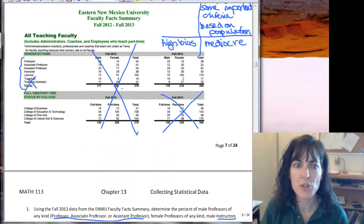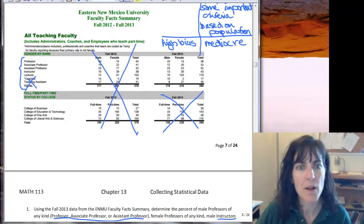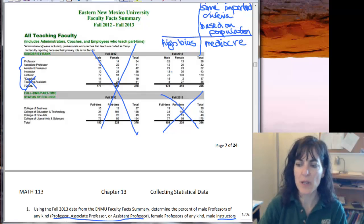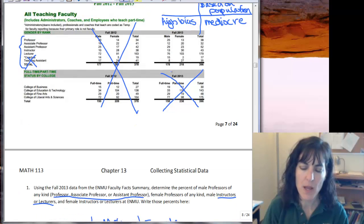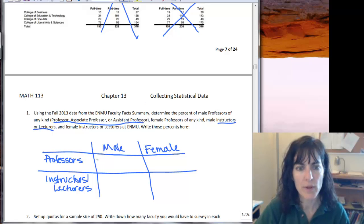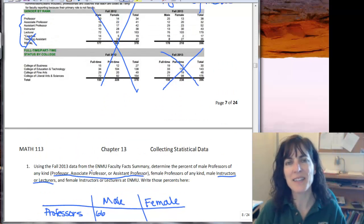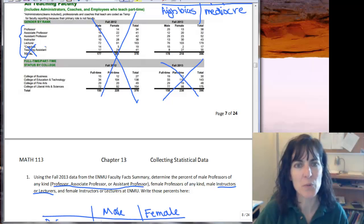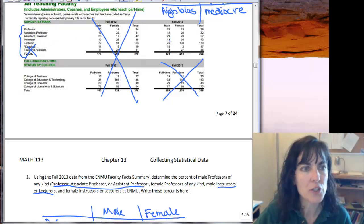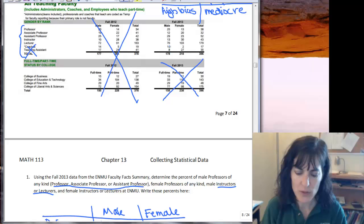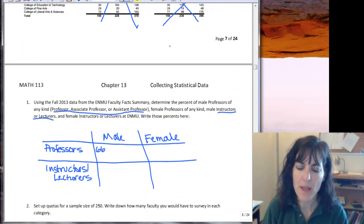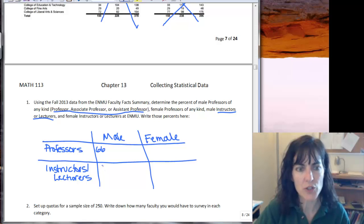Professors who are male, that's the first thing I want to know. That's going to be the first three categories so 25, 12, and 29. So I can add those up: 25 plus 12 plus 29 and I get 66 male professors. And then I need to know instructors or lecturers and so there's 13 and 76, so 13 plus 76 gives me 89 male instructor slash lecturers.